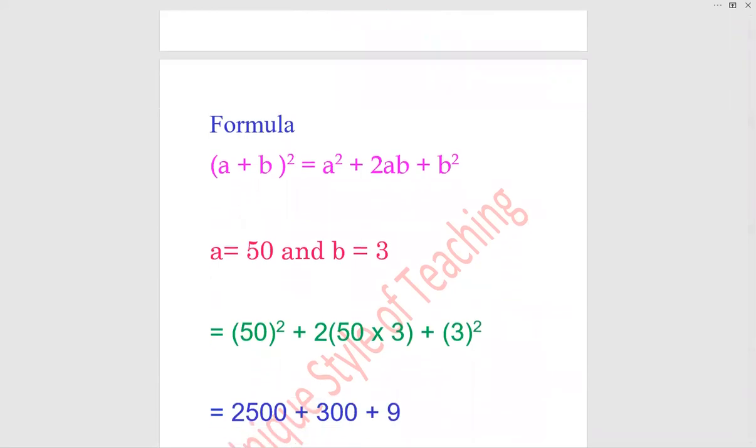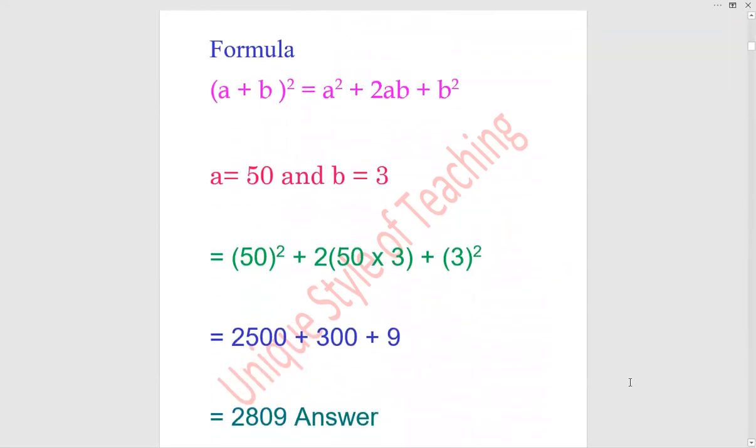Now let's solve this. 50² is 2500, 2 × 50 × 3 is 300, plus 3² is 9. When we sum up these three numbers, the answer will be 2809. This is your answer.